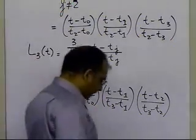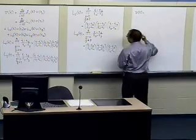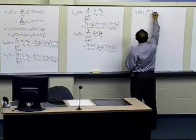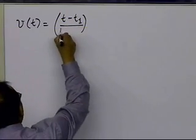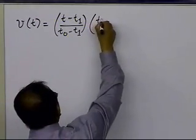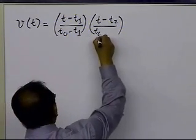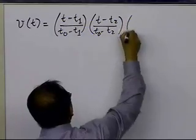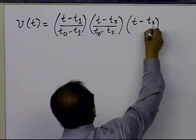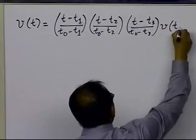So what does that turn out to be? It turns out to be as follows. e(t) is L0(t), so L0(t) is (t minus t1) divided by (t0 minus t1), times (t minus t2) divided by (t0 minus t2), times (t minus t3) divided by (t0 minus t3), times the velocity at t0.